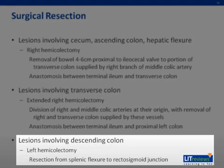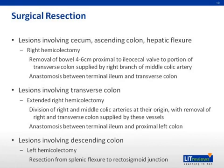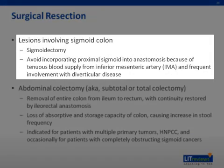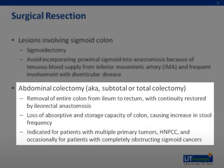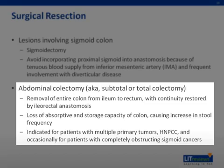A left hemicolectomy involving resection from the splenic flexure to the rectosigmoid junction is the procedure of choice for tumors of the descending colon. A sigmoidectomy is appropriate for tumors of the sigmoid colon. Most surgeons prefer to avoid incorporating the proximal sigmoid colon into an anastomosis because of the often tenuous blood supply from the inferior mesenteric artery and the frequent involvement of the sigmoid with diverticular disease. Abdominal colectomy, sometimes called subtotal colectomy or total colectomy, entails removal of the entire colon from the ileum to the rectum with continuity restored by an ileorectal anastomosis. Because of loss of absorptive and storage capacity of the colon, this procedure causes an increase in stool frequency. Abdominal colectomy is indicated for patients with multiple primary tumors, for individuals with HNPCC, and occasionally for patients with completely obstructing sigmoid cancers.